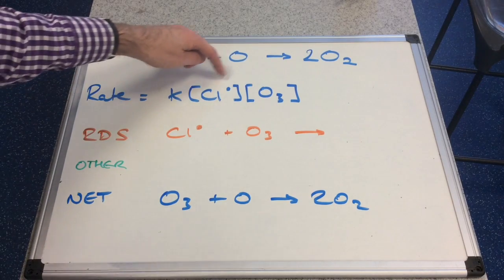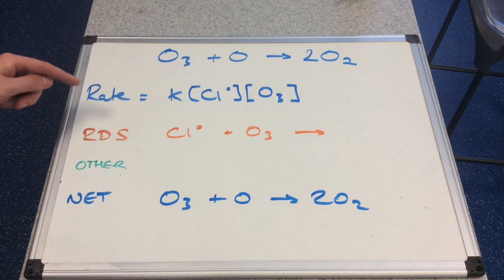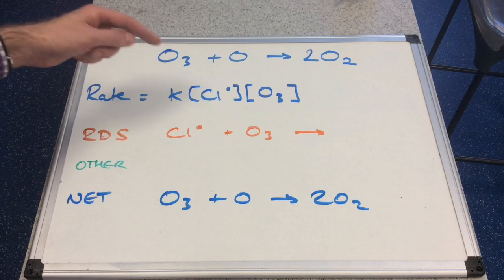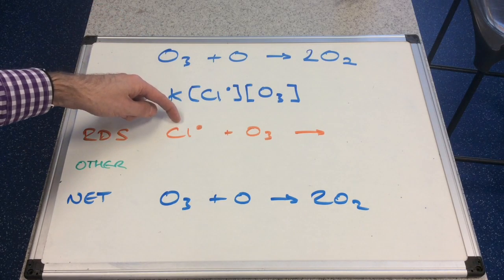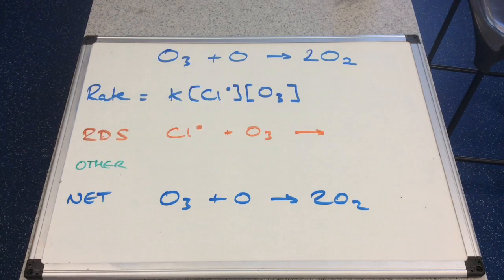So these are both order one, so that means that the rate determinant step contains one chlorine radical reacting with one ozone molecule.